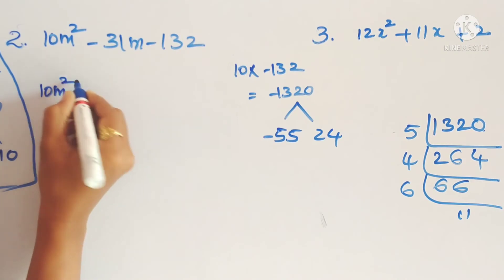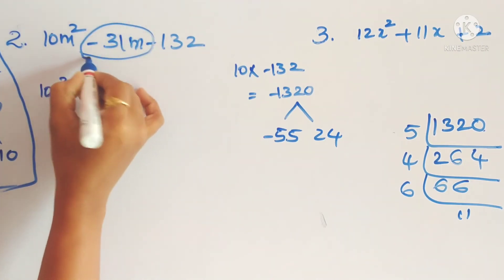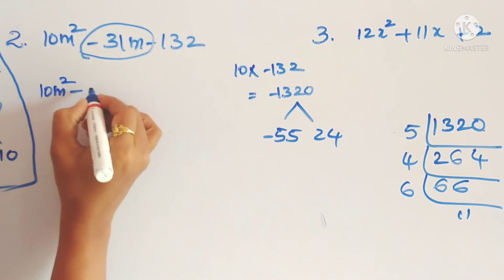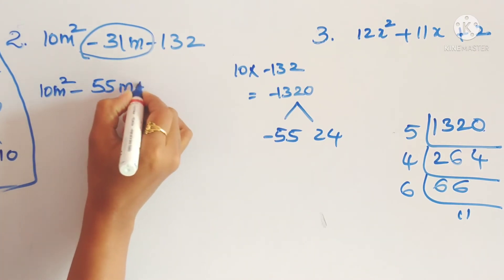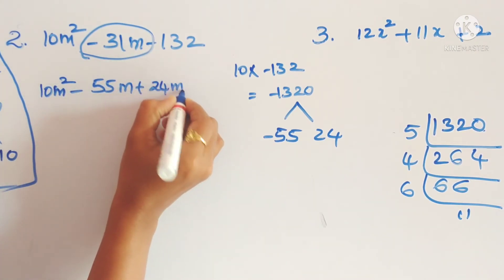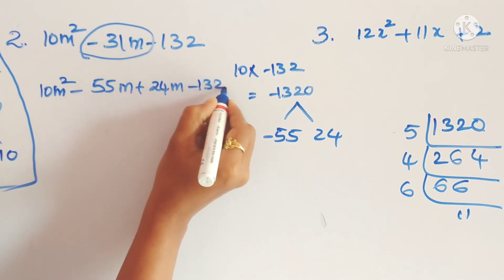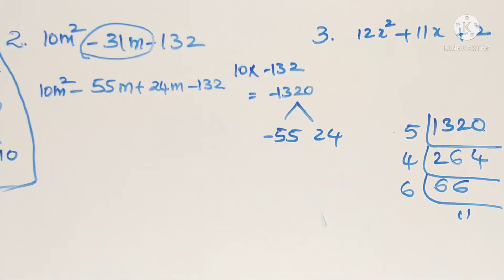So 10m square, and this minus 31m we will write as minus 55m plus 24m minus 132.